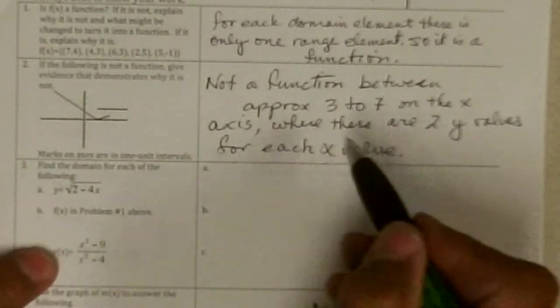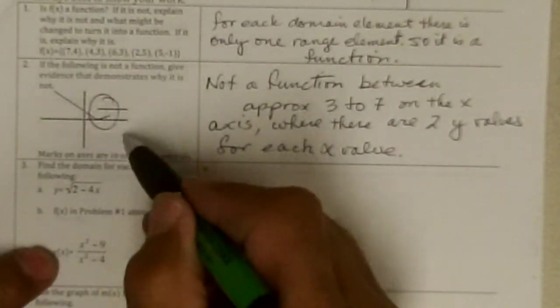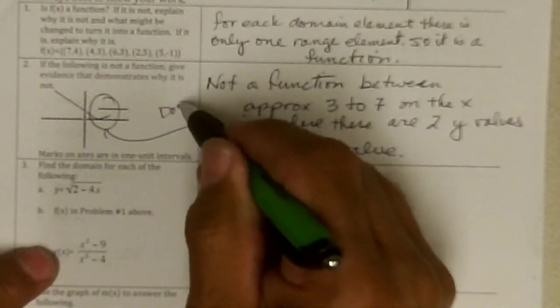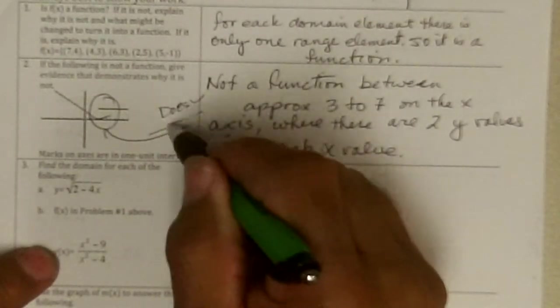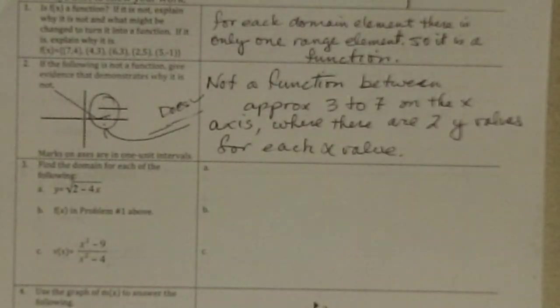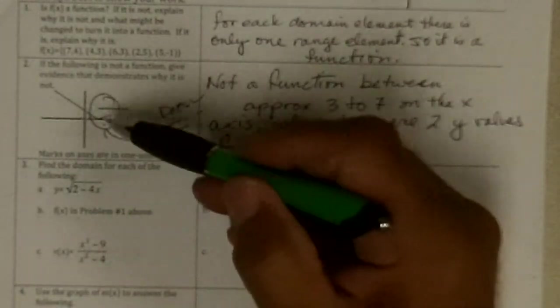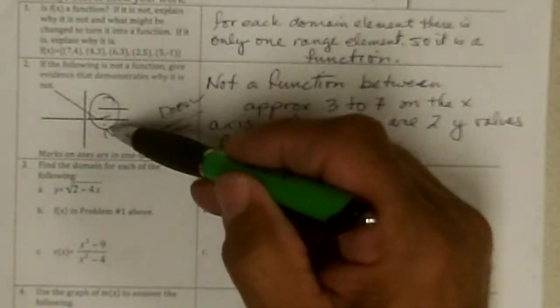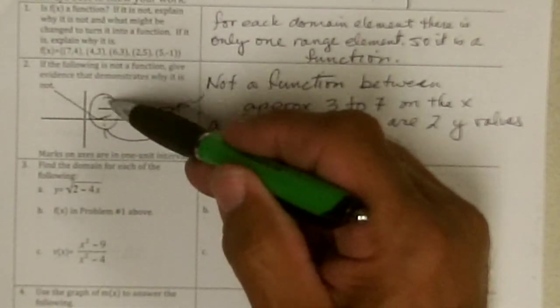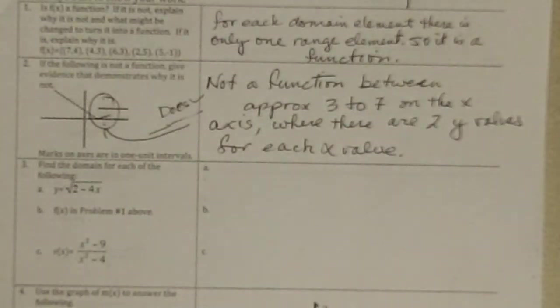And now, you could have said, circle this and say, doesn't pass the vertical line test here. And that would be also evidence enough for me to understand. Vertical line test, if it hits the graph in two places, and it does all over the place in that interval, then it's not a function.